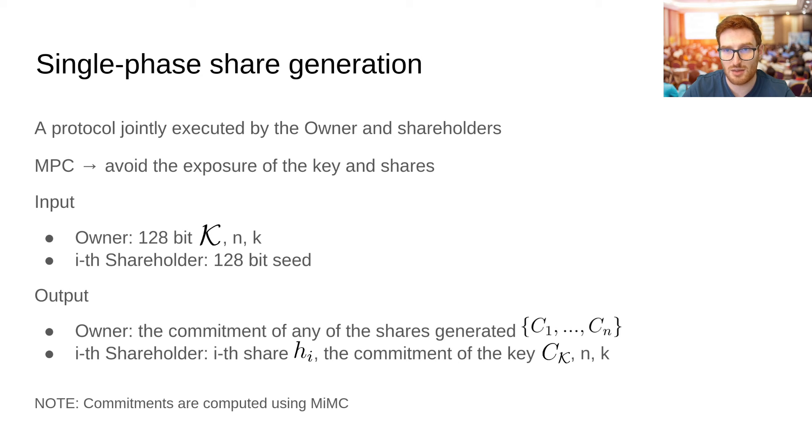To execute the share generation primitive, the owner and the shareholders start the MPC application. The owner inputs a random 128-bit key, together with the total number of shareholders n and the reconstruction threshold k. Each shareholder, instead, submits a random 128-bit seed. The key, as well as our k-1 seeds, are used as the coefficient of the Shamir secret sharing polynomial. Subsequently, using the owner method and xy coordinates, which represent the shares, are computed. Commitments are then produced using MIMC, a cryptographic primitive distinguished for its low multiplicative complexity. Finally, dedicated output is open to the other parties. The owner gets the commitment of all the shares generated, while each shareholder gets his share, the commitment of the key, along with n and k. We refer to this share generation primitive as single phase.